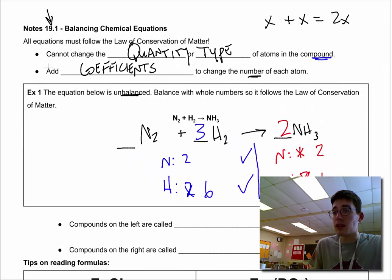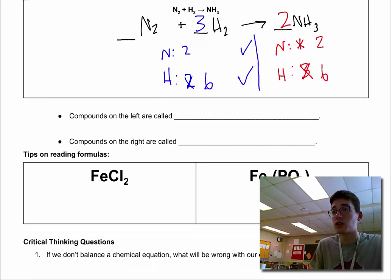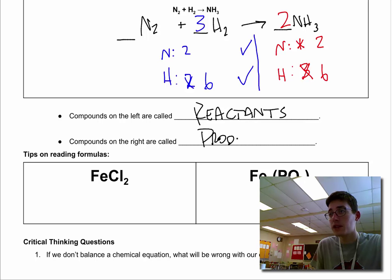And I've used these words a couple of times. Compounds on the left hand side of your equation are called reactants. That's what goes into the equation. And compounds on the right are called products. What comes out of the reaction.